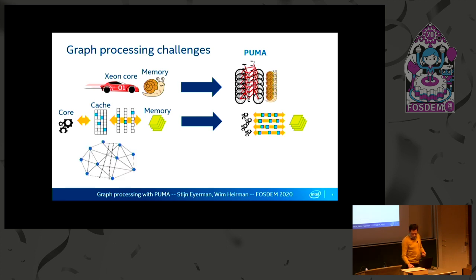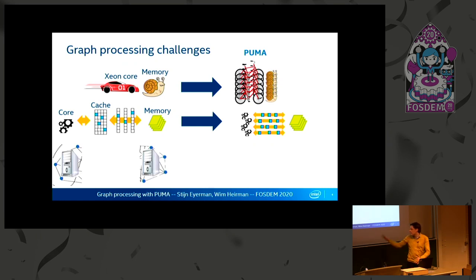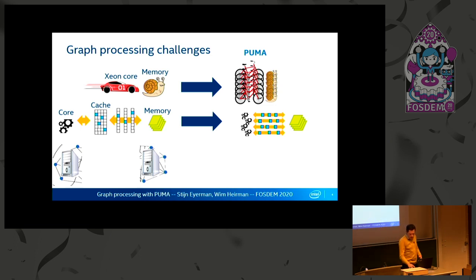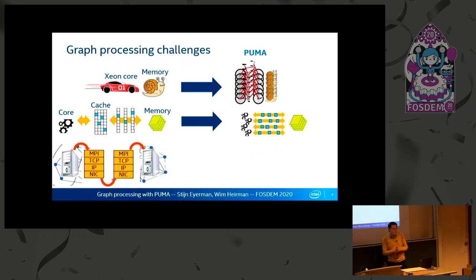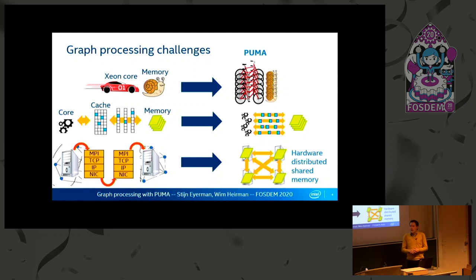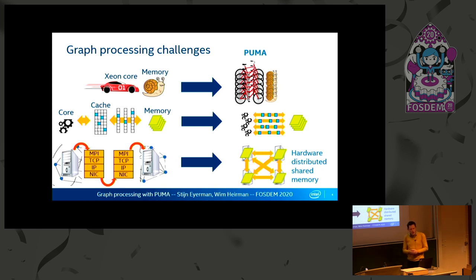Another issue is the size of the graph. If you have a very large graph, you need to partition it and put it into multiple nodes, multiple compute nodes, multiple servers. When the graph algorithm wants to access data on another node, it needs to go through the whole communication stack, which takes a lot of time. Graph algorithms are not very predictable in their locality, so it often occurs that we need to go off-node, giving a large performance penalty. For PUMA, we have hardware distributed shared memory — shared memory across the whole system — with a high bandwidth, low latency network to reduce the performance impact of remote accesses.